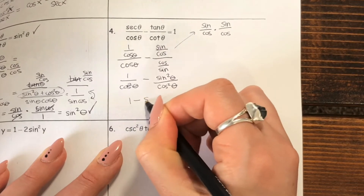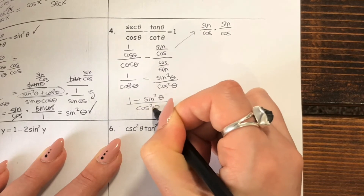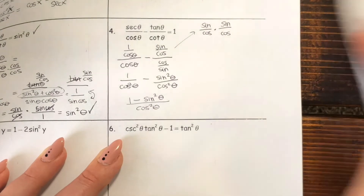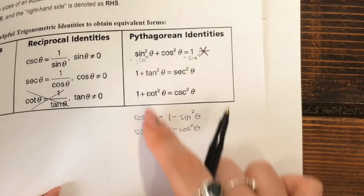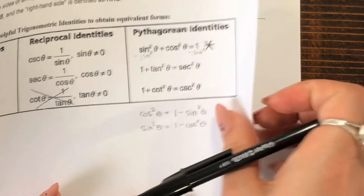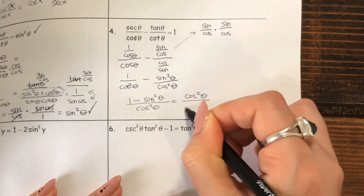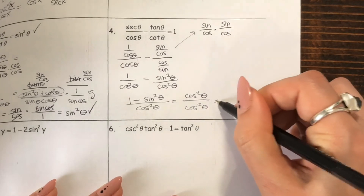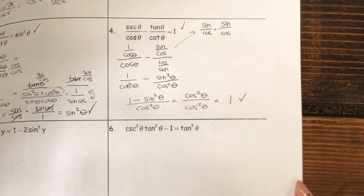Whenever you see those squares, it's probably a good sign you have your Pythagorean identity. Instead of using that version, it's the one where we subtract the sine squared over: one minus sine squared equals cosine squared. So we get cosine squared on the top over cosine squared on the bottom. Anything divided by itself just equals one. So we just showed that one equals one — and there's another identity proved.